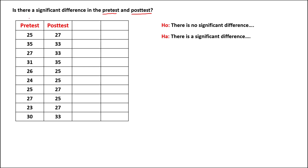From this table, these are the scores in the pre-test and the scores in the post-test. For this column, we need to find the difference between the two scores, so we just need to subtract. So 25 minus 27 is negative 2. 35 minus 33 is positive 2. 27 minus 33 is negative 6. Then 31 minus 35 is negative 4.